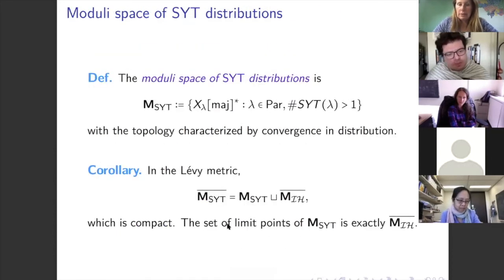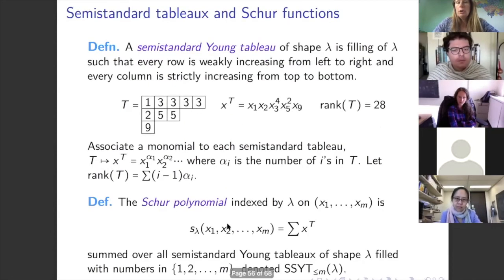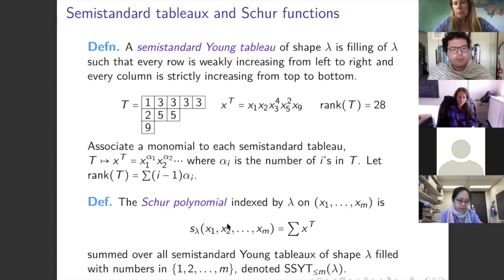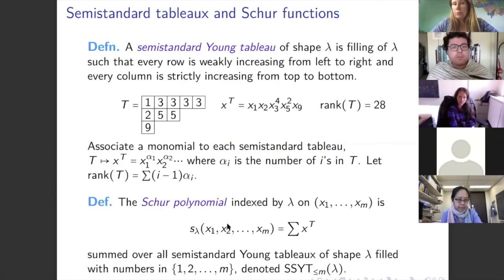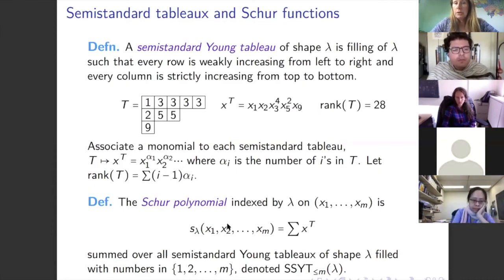Now it gets more complicated. We wanted to look at Stanley-Littlewood and Bjorner-Wachs formulas. Instead of standard Young tableaux, consider semi-standard Young tableaux: fill a partition shape with positive integers, weakly increasing on rows and strictly increasing on columns. For each filling T, form the monomial x^T = x₁^{#ones} x₂^{#twos} ⋯. The rank of a tableau — obtained by plugging in 1, Q, Q², … for the variables — is Σ(i−1)·αᵢ where αᵢ is the number of i's. The Schur polynomial s_λ(x₁,…,x_M) is the sum of x^T over all SSYT of shape λ with entries ≤ M.